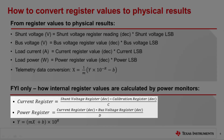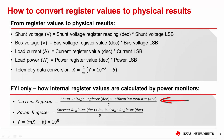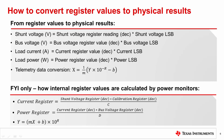Expected current and power register readings can be computed using the equations shown here. The current register value is obtained by multiplying the shunt voltage register value by the calibration register value, then dividing by a constant C. For the power register, multiply the current register value by the bus voltage register value and divide by another constant D. Please refer to the datasheet to find the values for C and D. These calculations are not required, but they can be useful to help predict register values for a given application.